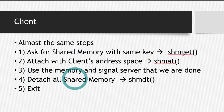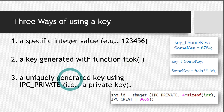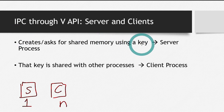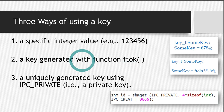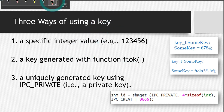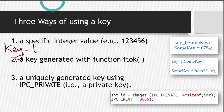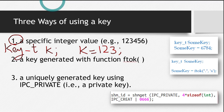Before looking at the steps in detail, let's see how we make a key. Remember, a shared memory is created using a key, and only that process can access that shared memory which has that key. We can create a key in three different ways. The data type of a key is key_t. Let's say we declare a key with the name K. The first method is simply: K equals some integer value, like 123. This is the simplest approach.